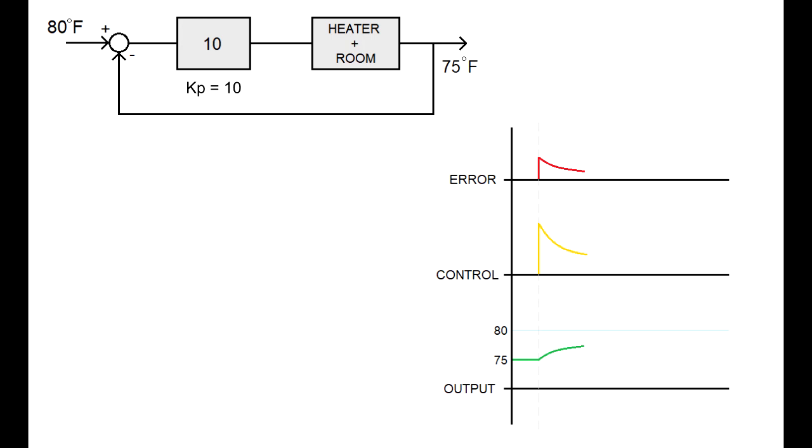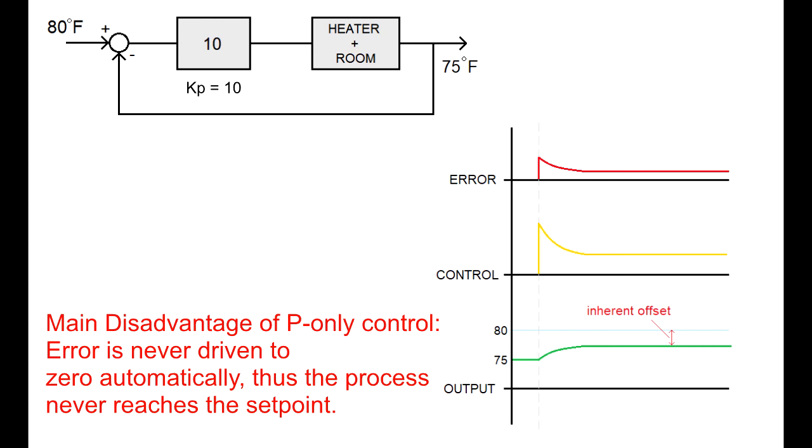But there's a catch. As we get closer to 80 degrees, the error decreases. And since our control effort is proportional to the error, the control signal decreases along with it, and so we lose the drive into the system. Because of this, the output asymptotes and we're left with an offset. This is the main disadvantage of proportional control, is that we can never drive the error to zero, because that would mean our control effort is zero.